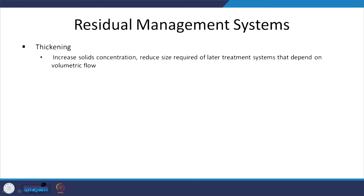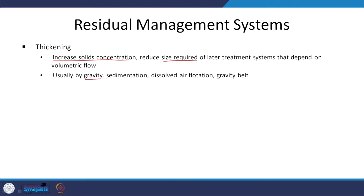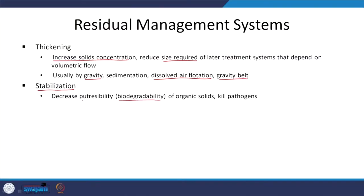The first one is thickening. What are we trying to do? Increase the solids concentration. Why? Because that will lead to reduced size requirements for the later treatment systems. We achieve that typically by gravity and, depending upon the type of sludge, by dissolved air flotation or gravity belt. Then stabilization — the secondary treatment unit sludge is biomass, it is active, so it will decay if we do not stabilize it. We are trying to decrease the biodegradability, meaning the putrescibility, of organic solids, and in the process we want to kill any pathogens in the sludge.